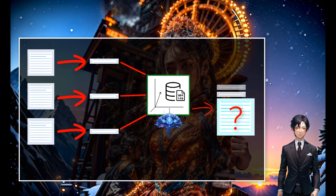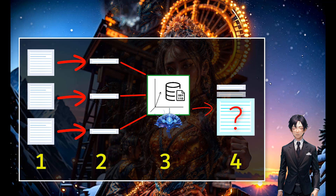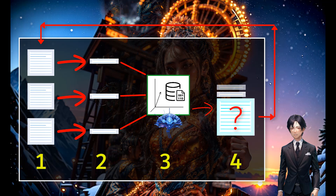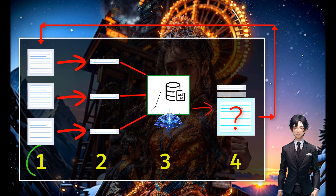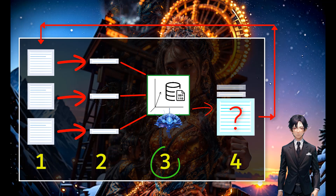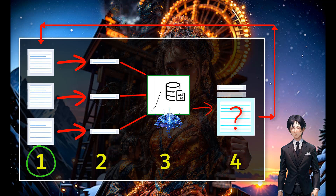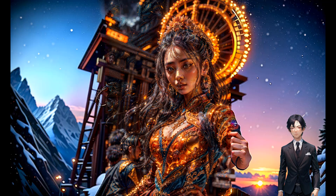That's the brain of our operation — every data block stored with its embedding of numbers. When you ask a question later, it pulls information out of that database based on that embedding number matching. To sum it up, you go through four steps: the information loops back into the initial phase where you summarize again, add to the database, and query again. This loopback increases the memory of your AI chatbot so it gets to know you over time.